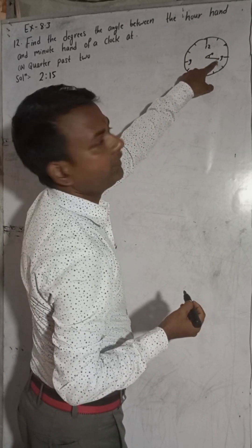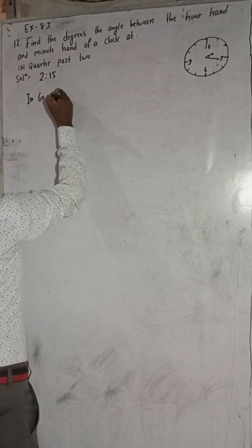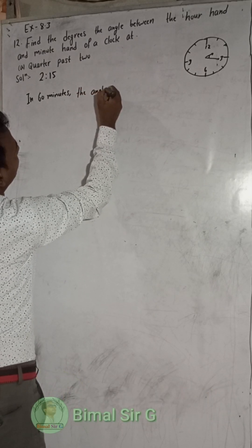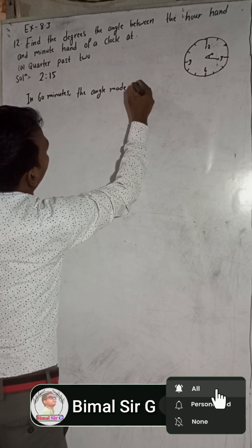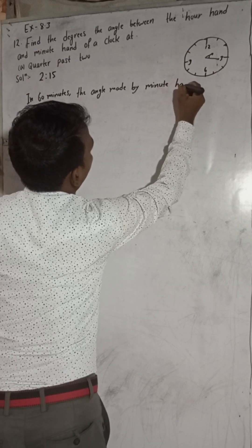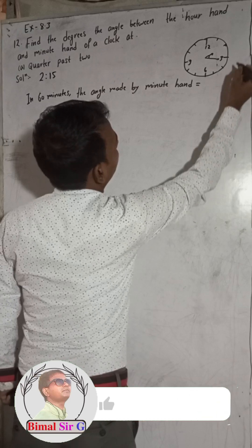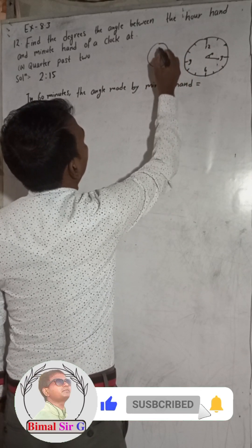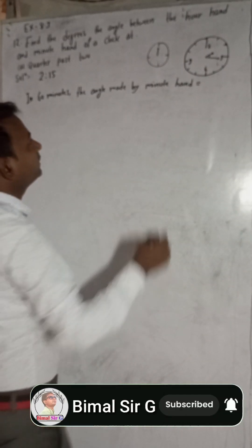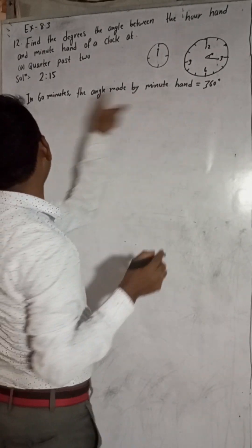First of all, I will find the angle made by the minute hand. In 60 minutes, the angle made by the minute hand — if the minute hand moves completely around the clock, it will make 360 degrees. So the minute hand makes 360 degrees in one complete rotation, which is 60 minutes.